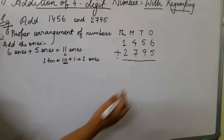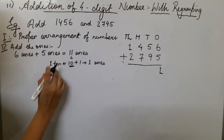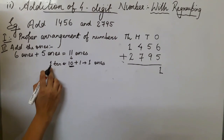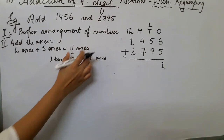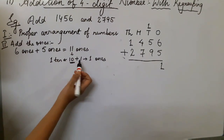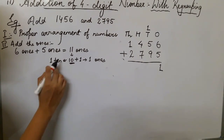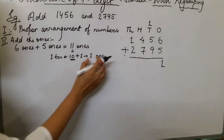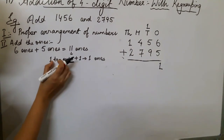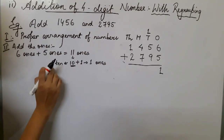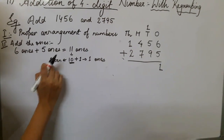Eleven ones is ten plus one. Here ten means one ten and one means one ones. So in the ones place, I write 1. The one ten gets carried to the tens place. Since what we got was eleven ones, we break it into ten plus one: one ten goes to tens place, one ones stays in ones place.